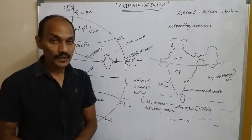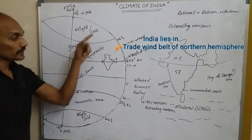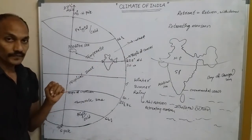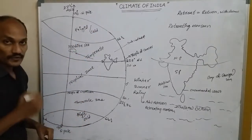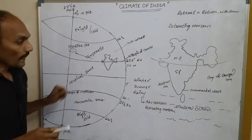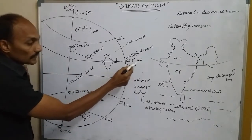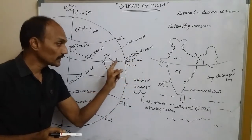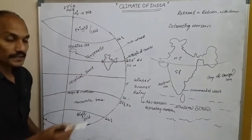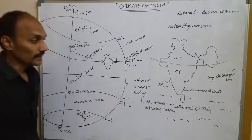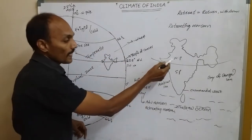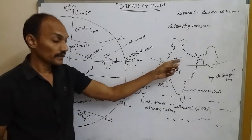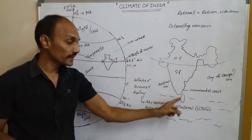India lies in the trade wind belt of the northern hemisphere. The 23.5° North latitude is called the Tropic of Cancer, which divides India into two parts — the northern part and the southern part. During winter, we can see extreme temperatures in the northern part, but the southern part experiences moderate temperature — that means equable climate.